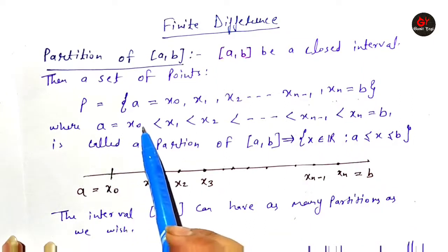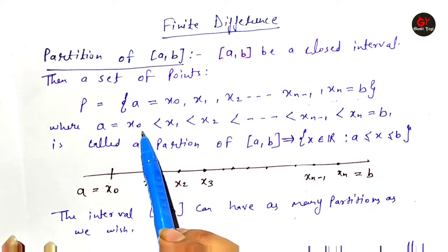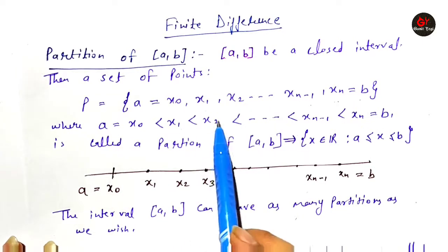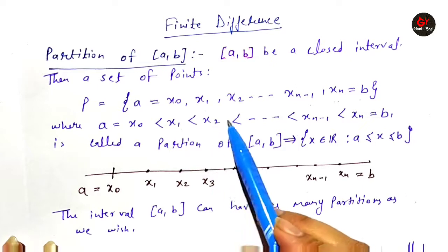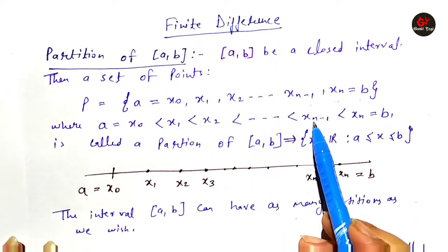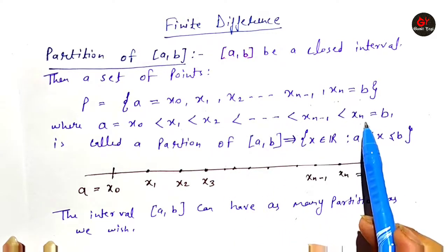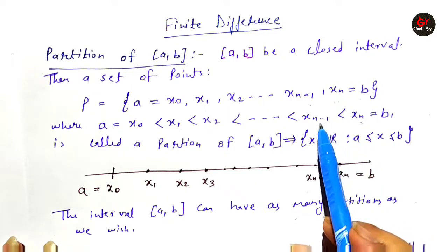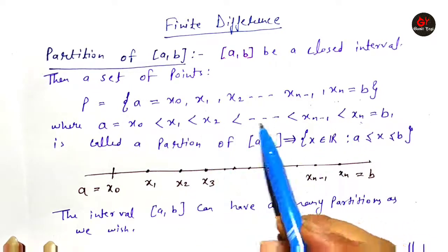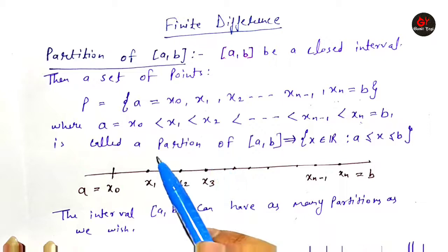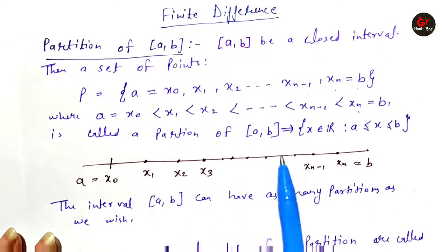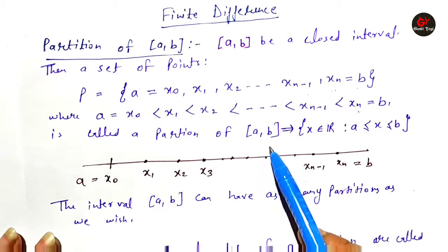Where A equal to X0 — X0 is our initial point. Here X0 is less than X1, X1 is less than X2, and similarly Xn minus 1 is less than Xn. So all the elements we have taken are smaller than Xn. This step of partition is called a partition of closed interval A-B.